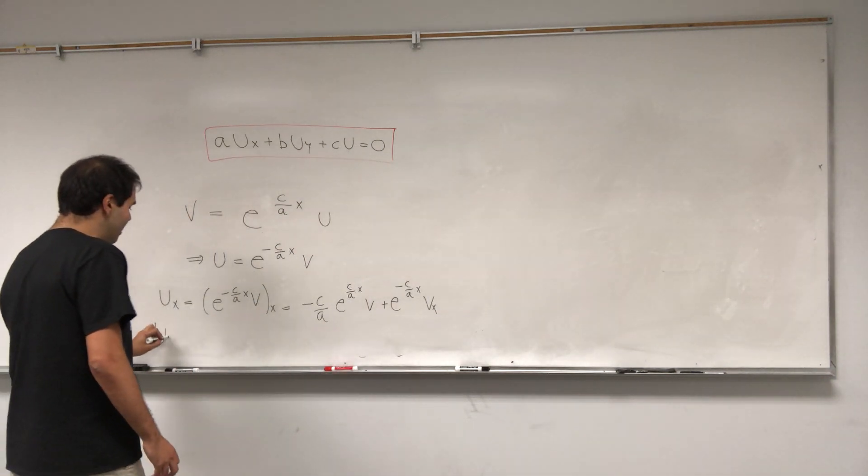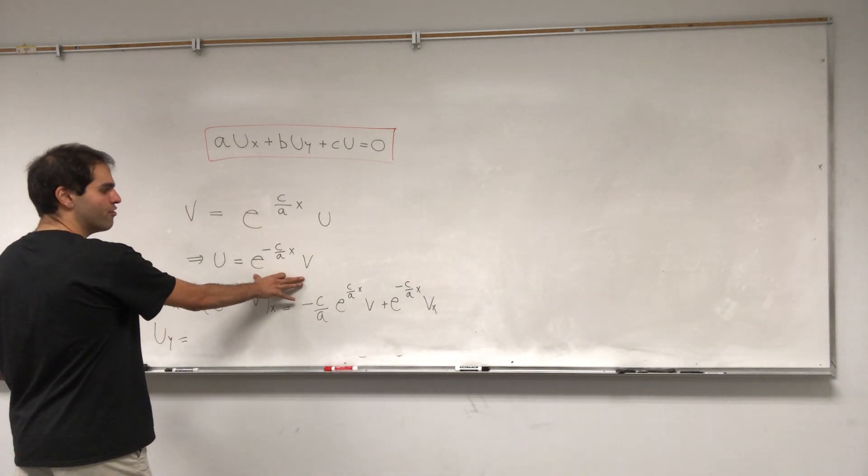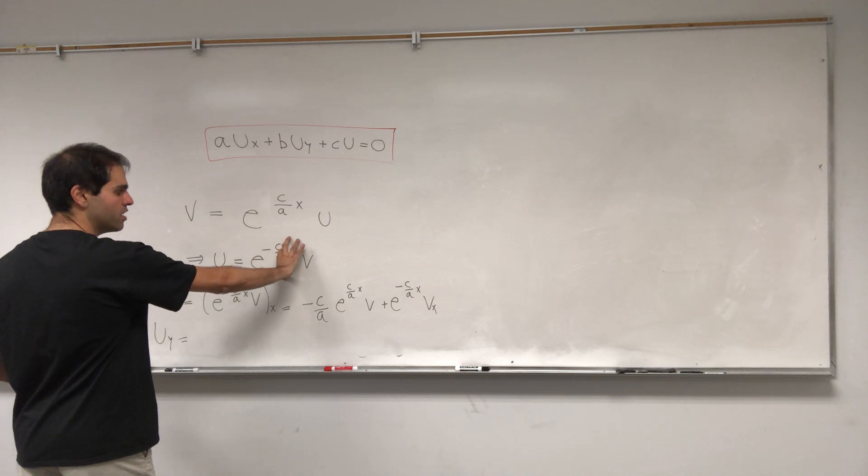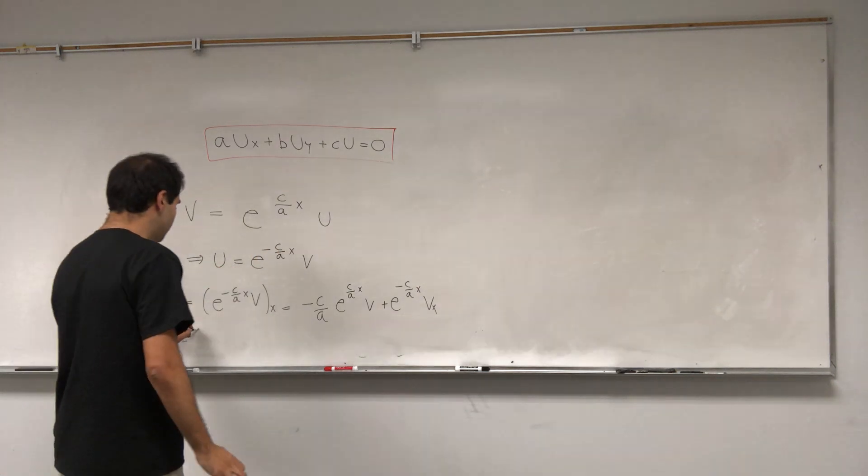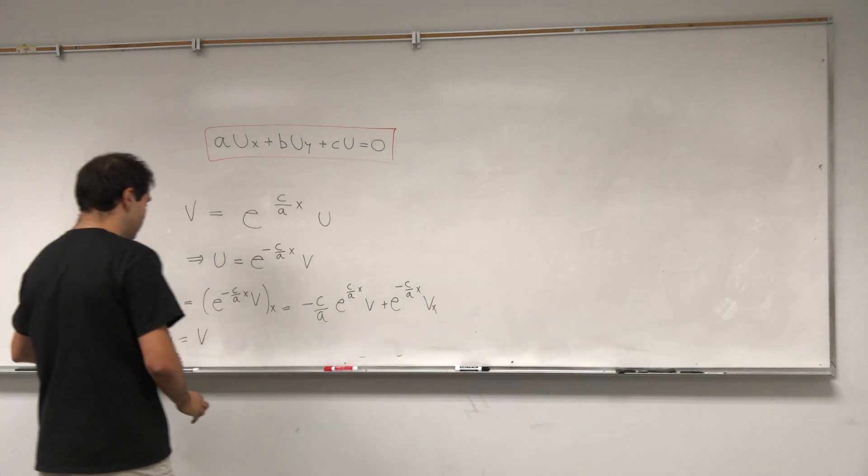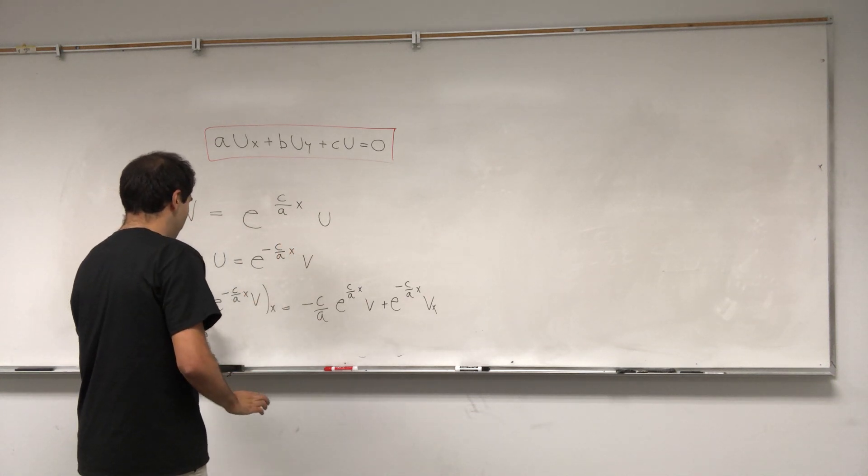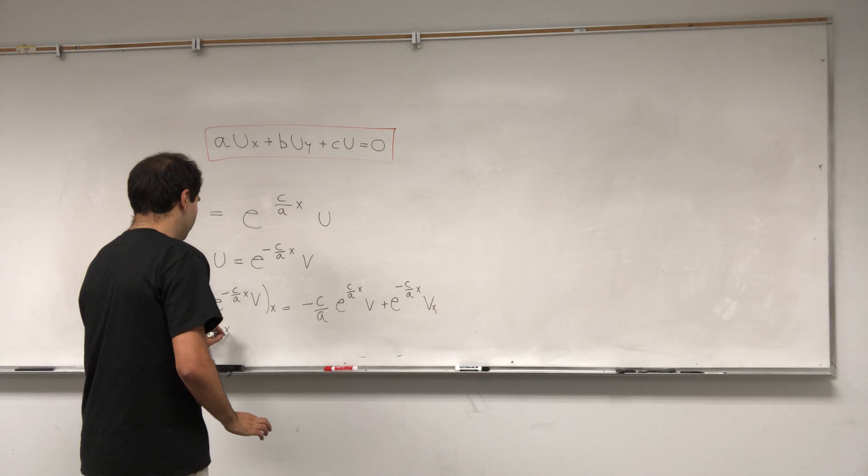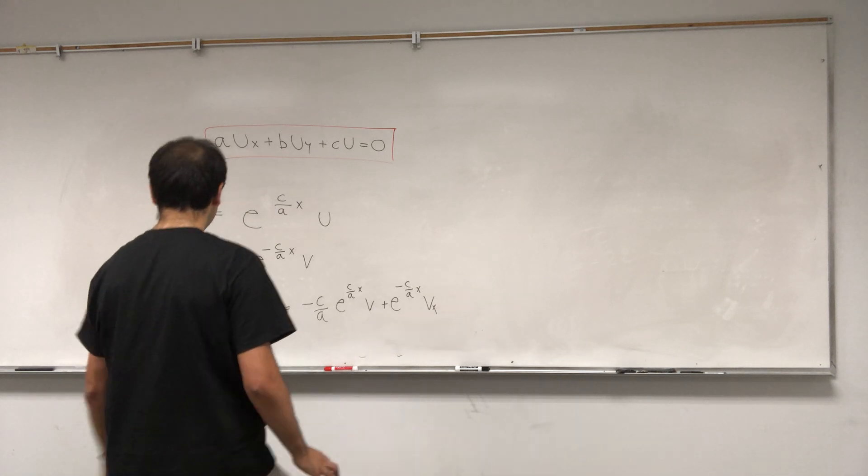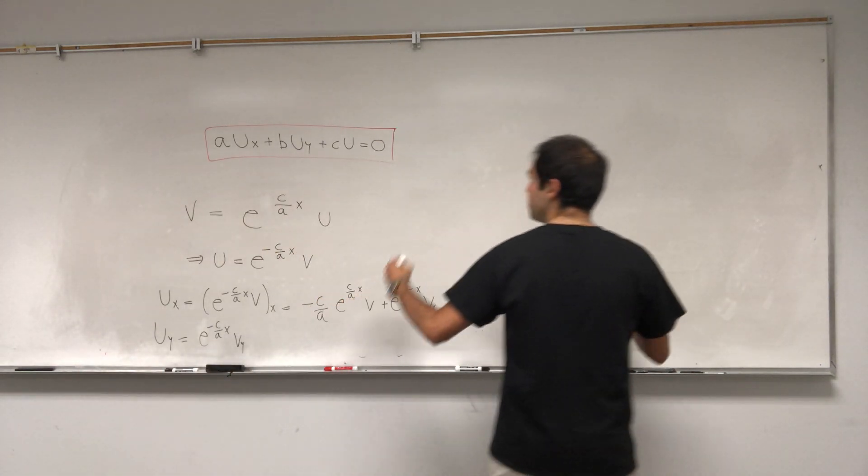And then UY is actually much easier to differentiate because this doesn't depend on Y. So we just have that it's this constant times VY: E to the minus C over AXVY. And then just plug into the PDE.